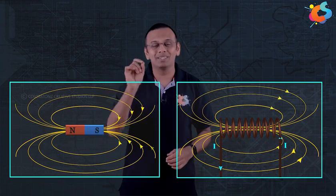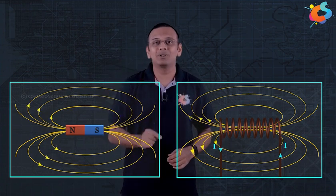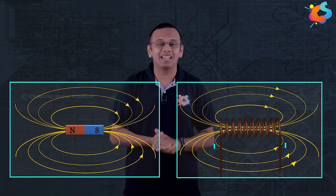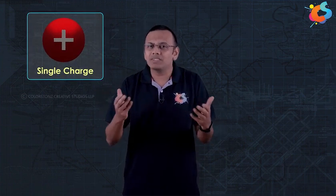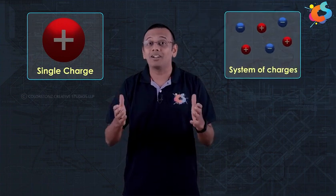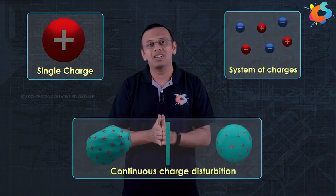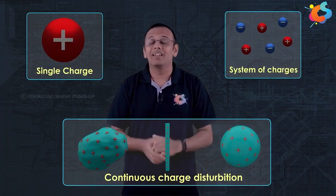Similarly, that is the same purpose for electric field lines. Electric field lines help us in visualizing, in creating a picture of the electric field produced by a charge, a system of charges, or a continuous charge distribution. And they represent the magnitude as well as direction of this electric field.